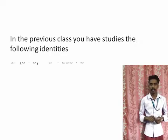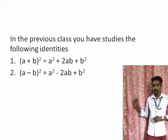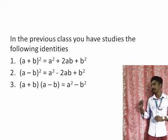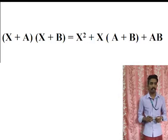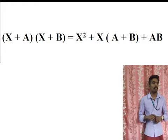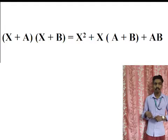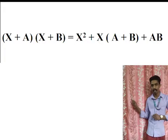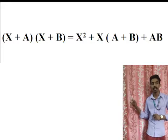In this class, you have already studied these identities: (a+b) all squared, (a-b) all squared, and (a+b)(a-b). In this session, we are studying the standard form of these identities: (x+a)(x+b), which is equal to x squared plus (a+b)x plus ab.